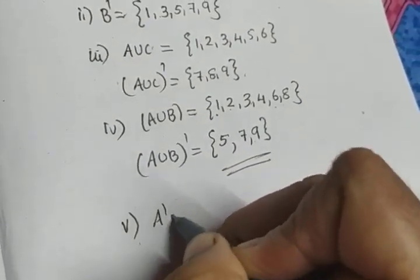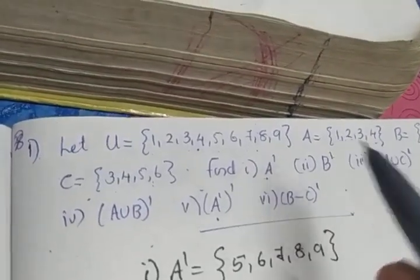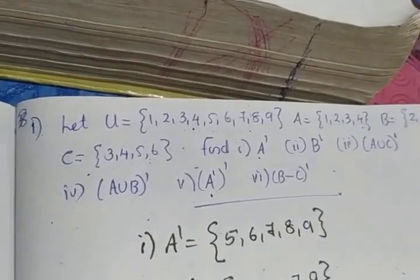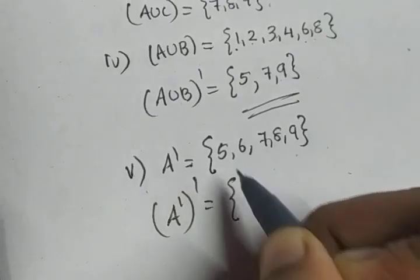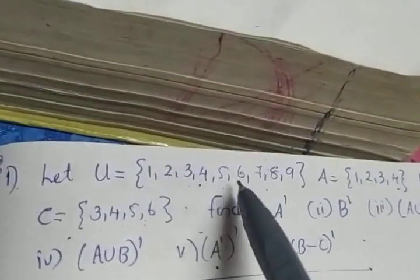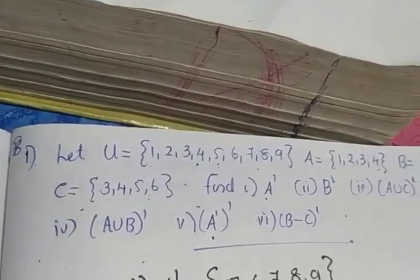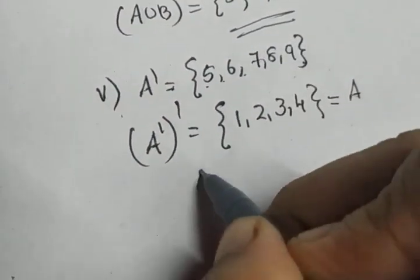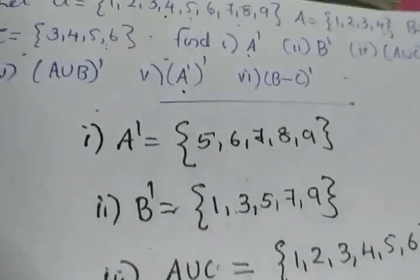The fifth part is (A dash) dash. First find A dash: A is {1,2,3,4}, so A dash is {5,6,7,8,9}. Now (A dash) dash means strike off those elements from U — striking off 5, 6, 7, 8, 9, the balance is {1,2,3,4}, which equals A. This confirms the property: (A dash) dash equals A.